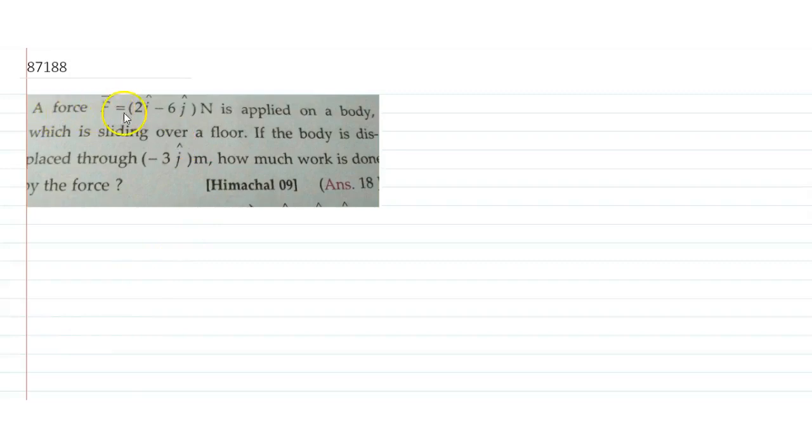In this past question, a force F vector is applied on a body. The force given is 2i minus 6j newtons. The body is sliding over a floor. If the body is displaced through displacement vector minus 3j meters, how much work is done by the force?